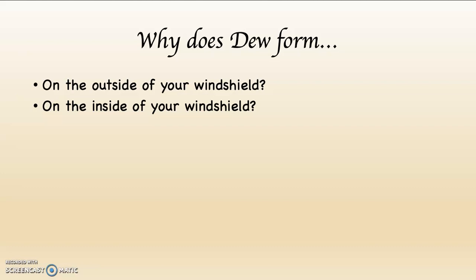Why does dew form on the outside of your car's windshield, and why does dew form on the inside of your car's windshield? One of these has to do with changing air temperature; the other has to do with changing specific humidity. The one on the outside is because at night the temperature drops, the temperature of the car drops, and the air in contact with it drops. Eventually it reaches the dew point temperature and relative humidity is 100%. On the inside of your windshield — imagine you're sitting inside your car at night, windows rolled up, and you're breathing. You are exhaling moisture into the atmosphere, effectively changing the specific humidity.